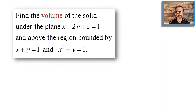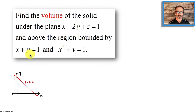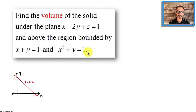Here's the problem again — mainly it's a volume. We'll get back to the plane in just a minute. It's under the plane and above the region bounded by these two graphs. What is x plus y equals 1? One way to do it in two dimensions: think of x-intercept and y-intercept, or write it as slope-intercept form y equals 1 minus x. When y equals 0, x equals 1; when x equals 0, y equals 1. For x squared plus y equals 1, subtract x squared from both sides to get y equals negative x squared plus 1.